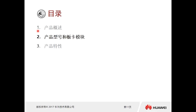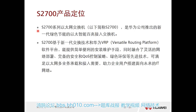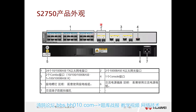Next, let's take a look at some corresponding product models and the modules of this card. We'll introduce each separately. Let's start with the S2700 — understanding its positioning: it is a 100 megabit access switch. Now let's take a look at the overall appearance of the S2700 one by one.